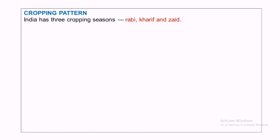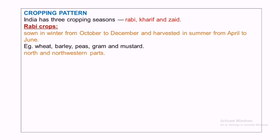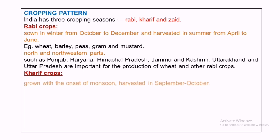The next topic is cropping patterns. The major cropping seasons in India are Rabi, Kharif, and Zaid. Rabi crops are sown in winter from October to December and harvested in summer from April to June. Examples include wheat, barley, peas, etc. This type of farming is practiced in the north and northwestern parts such as Punjab, Haryana, Himachal Pradesh, Jammu and Kashmir, etc.